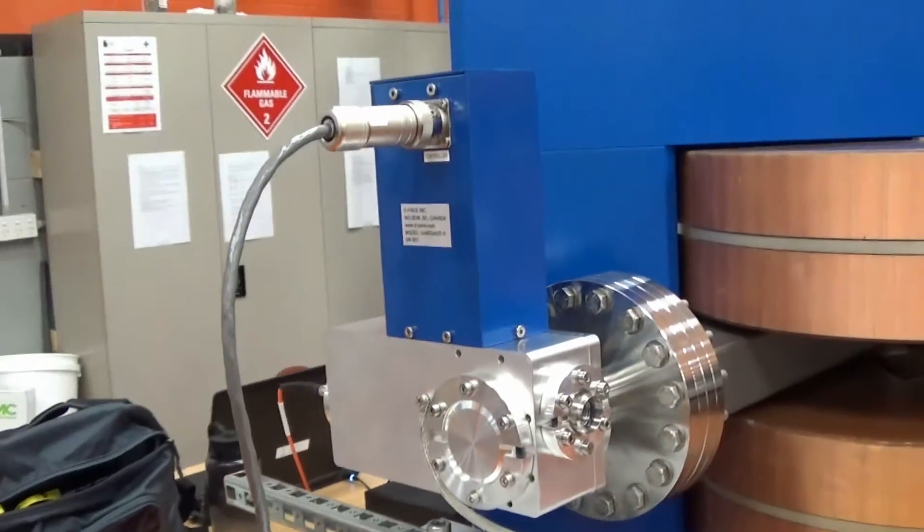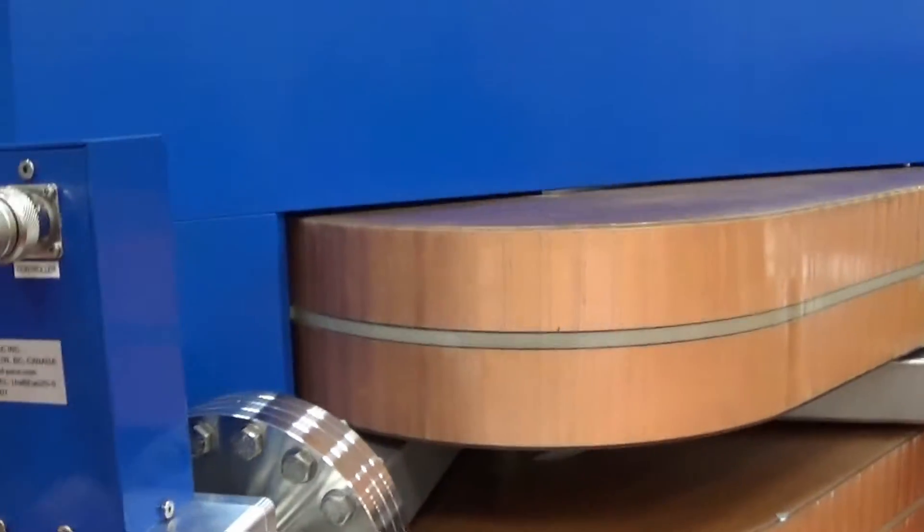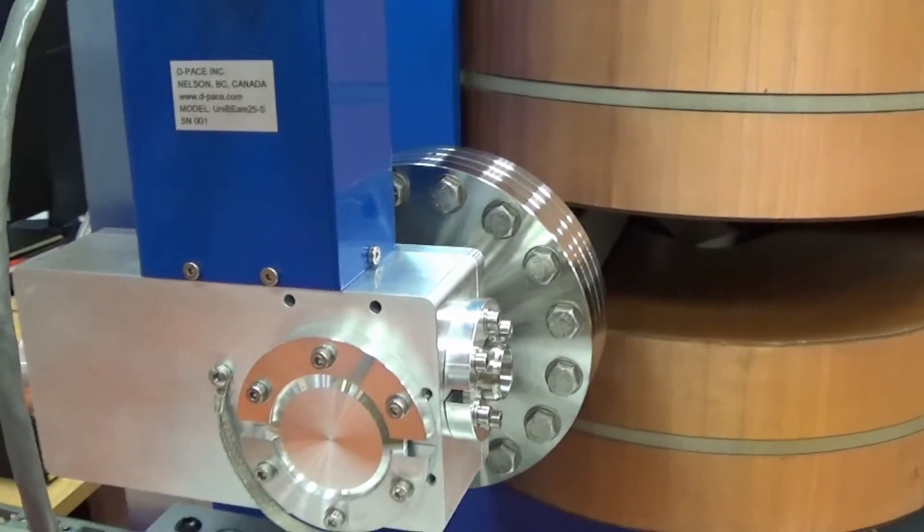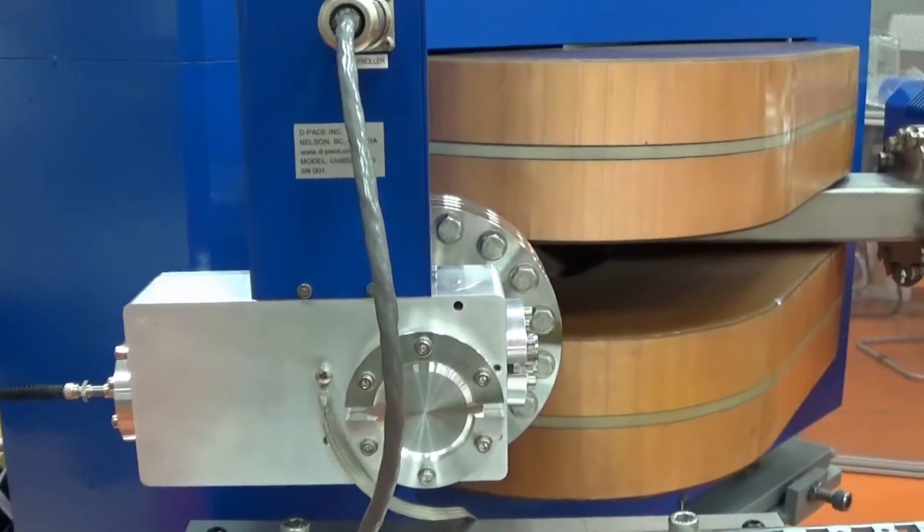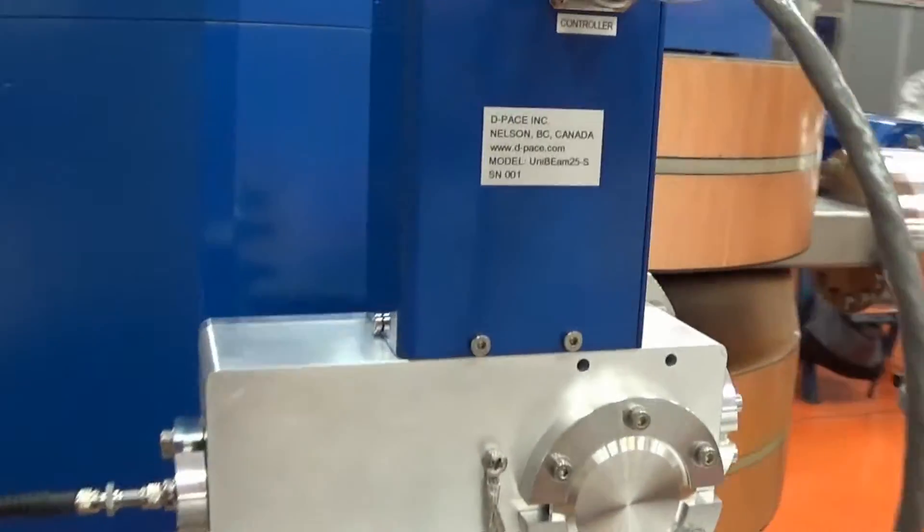This little guy here is an optical wire scanner. It has a piece of fiber optic fiber that moves back and forth in the beam. It fluoresces and we can measure the light coming out of it and get a profile of the density of the beam. It's a new product under development.